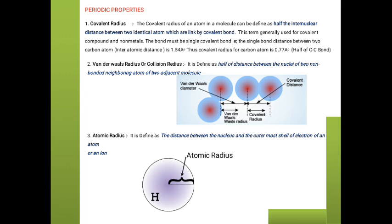The second point is the Van der Waals radius, also called collision radius. It is defined as half the distance between two nuclei of two non-bonded neighboring atoms of two adjacent molecules. These are non-bonded molecules. The full distance between them is called the Van der Waals diameter, and half that distance is called the Van der Waals radius.